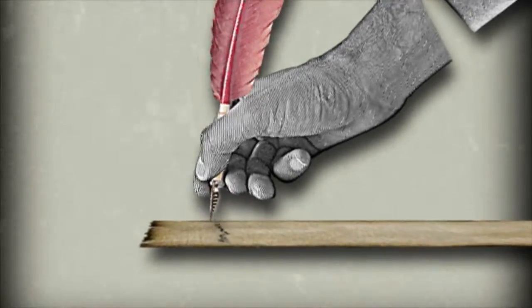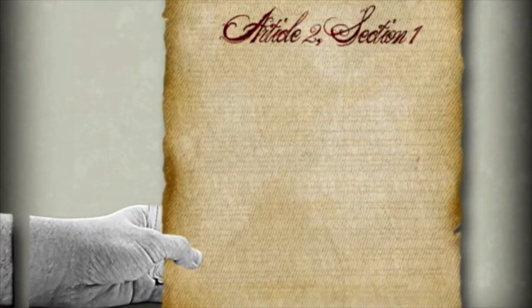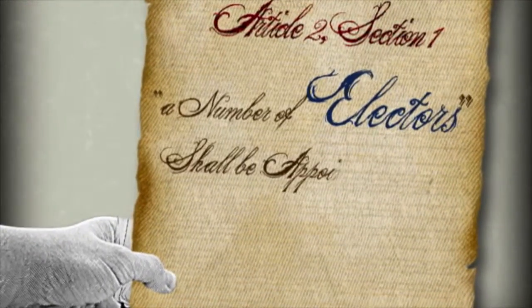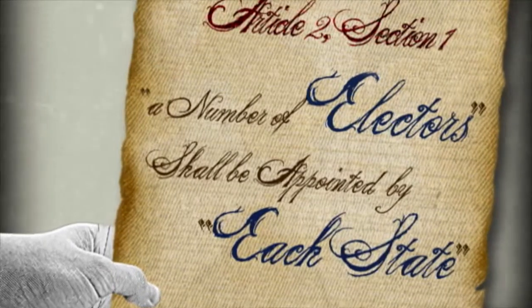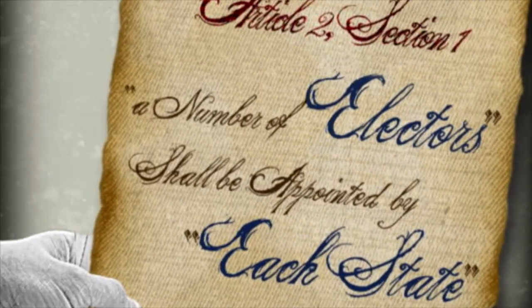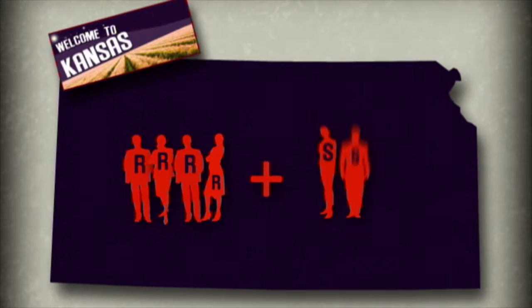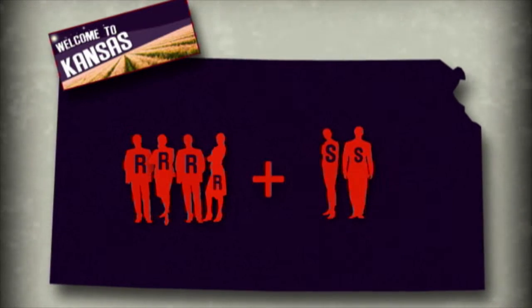Article 2, Section 1 of the Constitution says that the president will be chosen by electors from each state. How many electors does each state get? They get the number of their representatives in Congress plus two more, one for each senator.